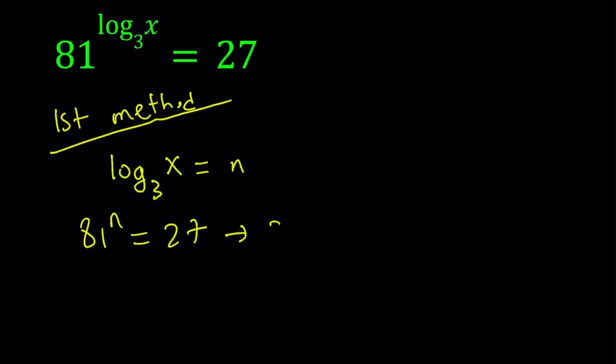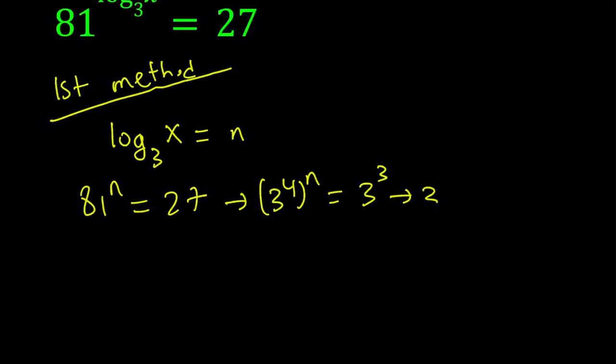So I can write the 81 as 3 to the fourth power and then to the nth. And 27 is 3 to the third power. By using the power of a power, I can write this as 3 to the 4n equals 3 to the power 3. And from here, the bases are equal, so are the exponents. I can safely say that 4n is equal to 3 and n is equal to 3 fourths.